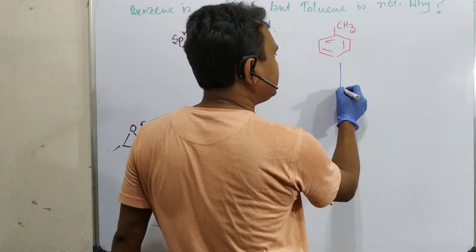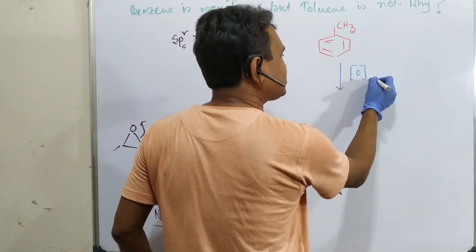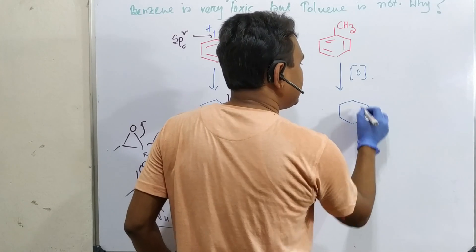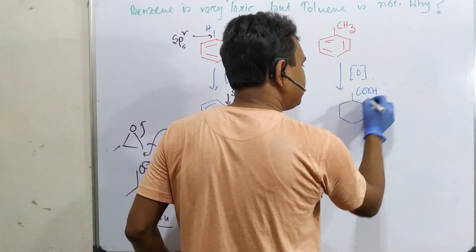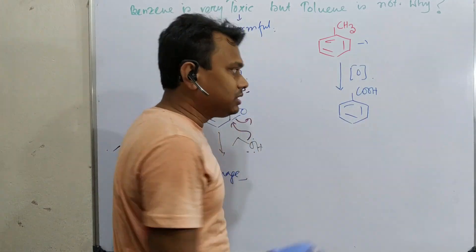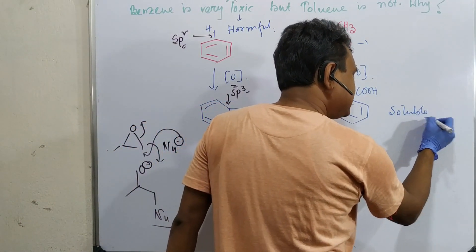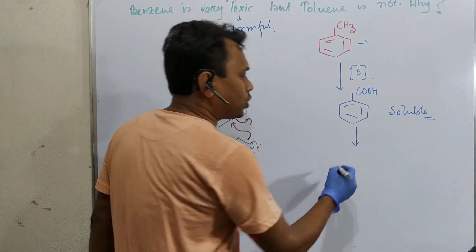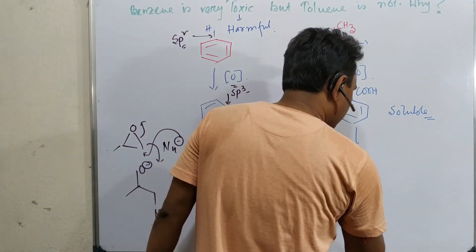Now if you look at toluene, we know that in case of toluene, side chain oxidation occurs and ultimately this oxidation results in benzoic acid. We know toluene is not that water soluble, but benzoic acid is highly water soluble. Since it is water soluble, it comes out from our body.